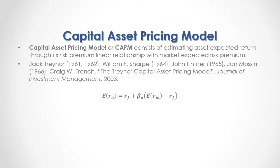As a formula, the expected asset return is equal to the risk-free rate of return plus the asset beta — which describes the linear relationship between asset and market risk premiums — multiplied by the expected market return minus the risk-free rate of return.